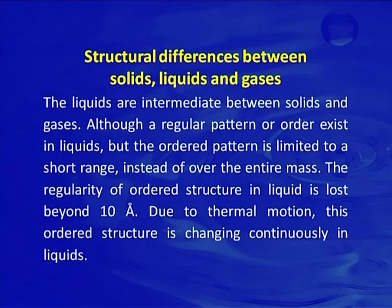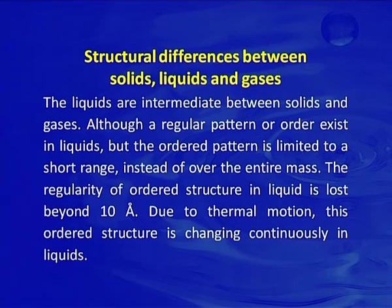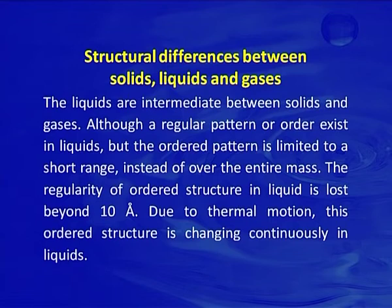In solid, molecules, atoms or ions are arranged in regular patterns due to very strong cohesive forces and are not free to move about — they have no translational or rotational degree of freedom. In gas, the molecules are in constant motion and there is no regular pattern in the arrangement of molecules. The liquid is intermediate between solid and gases. Although an irregular order exists in liquid, the ordered pattern is limited to a short range instead of over the entire mass. The regularity of ordered structure in liquid is lost beyond 10 angstroms. Due to thermal motion, this ordered structure is continuously changing in liquid.